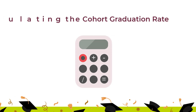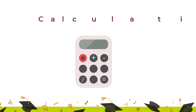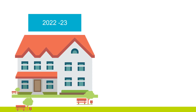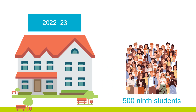Calculating the cohort graduation rate. To get a better understanding of how the graduation rate is calculated, let's look at an example. A high school starts the 2022-23 school year with 500 ninth grade students. This group of students represents the initial cohort.